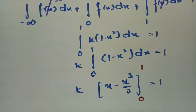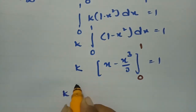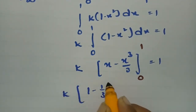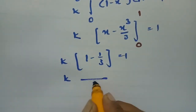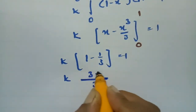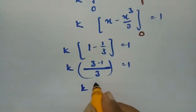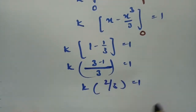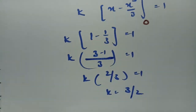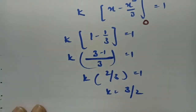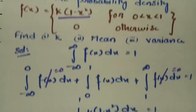Substituting the limits, we get k times (1 minus 1/3) equal to 1, which is k times 2/3 equal to 1. Therefore k equals 3/2.